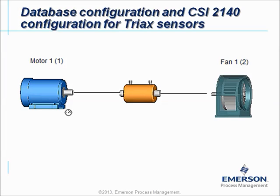Let's take a closer look at a live example. If we want to measure this machine using a Triax sensor and we install the Triax sensor always in horizontal direction, we have to install it on 4 locations: motor outboard, motor inboard, fan inboard, and fan outboard. So we will install the Triax sensor 4 times, always in horizontal and radial direction. What should we do in the database to make sure it is measured this way?